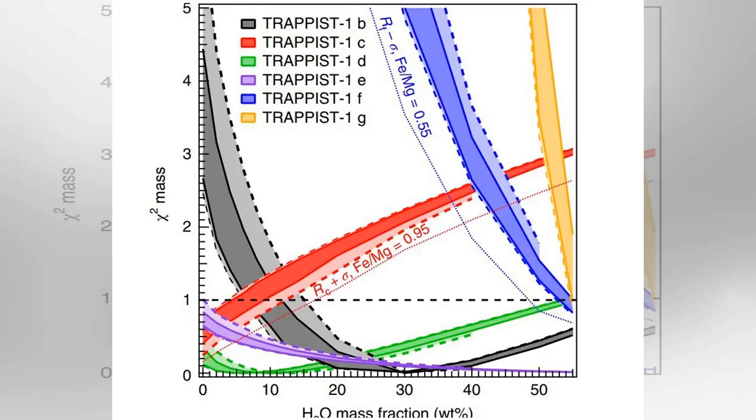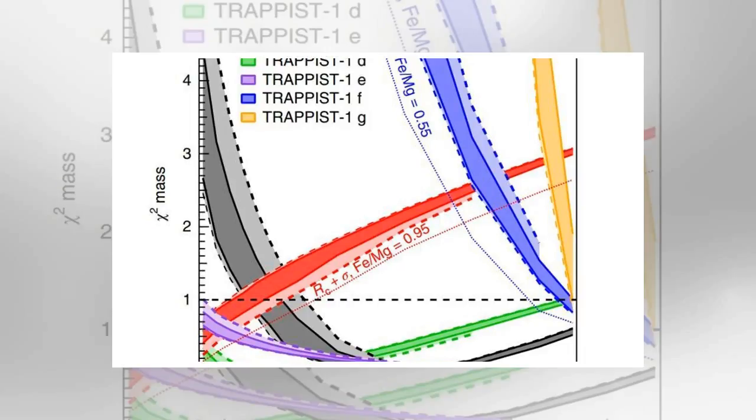Model Chi-squared goodness of fit for the masses of the Trappist-1 planets as a function of the planet's radius and relative H2O mass fraction in weight percent added to the system. Credit Nature Astronomy 2018 DOI 10.1038/s41550-018-0411-6.